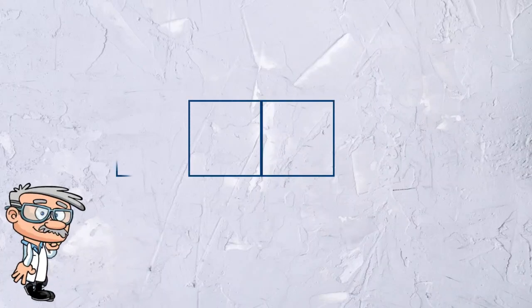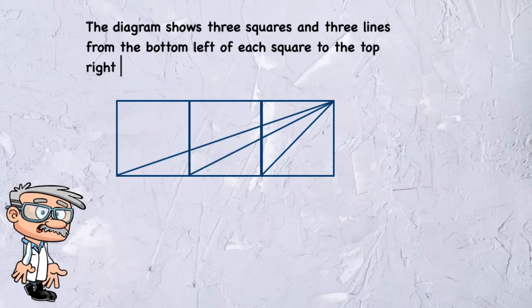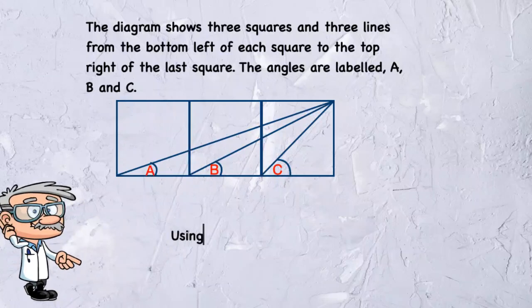Thank you, Maurice. This diagram shows three squares and three lines from the bottom left of each square to the top right of the last square. The angles are labeled A, B and C.